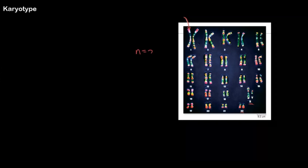So our n is equal to 23. And if we count these individual chromosomes — one, two, three, four, and so on — we're going to get 2n is equal to 46.